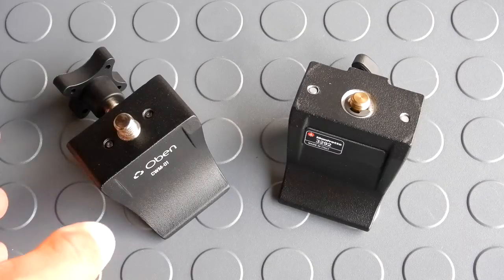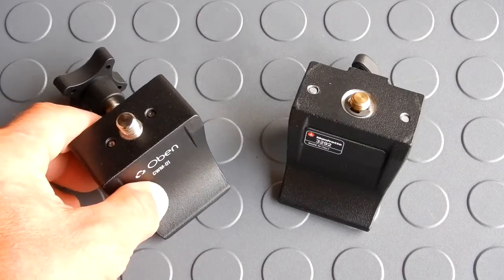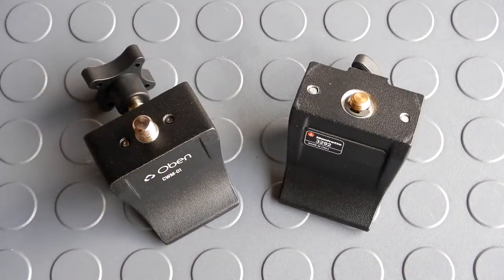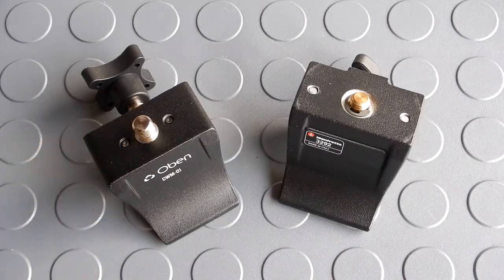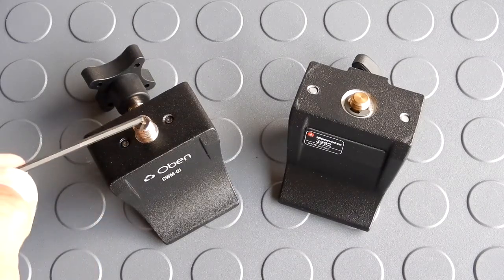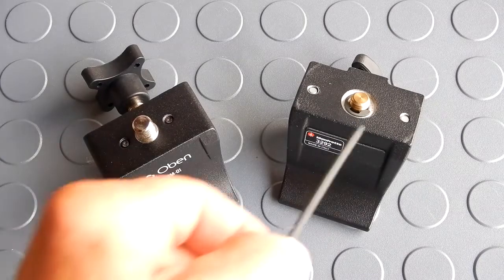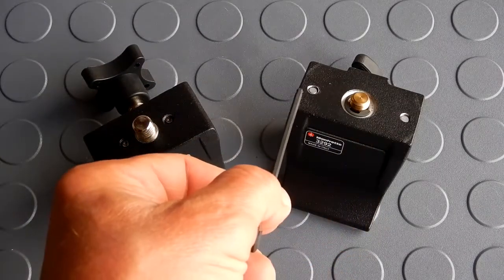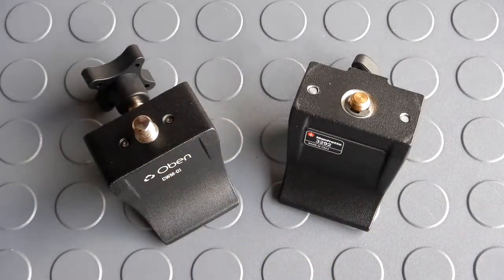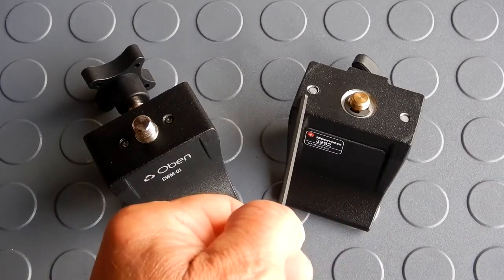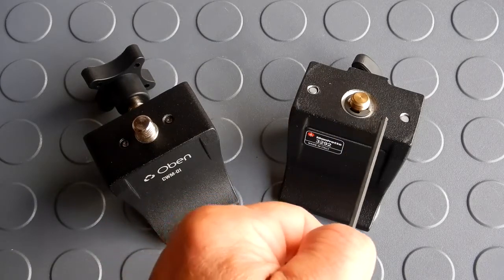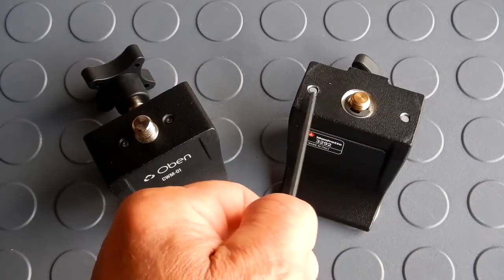Now if we take note, they also have lockdown screws. You can see here you've got one, two on the Oban here close to this 3/8-16 stud. On the Manfrotto you've got two and they're further apart. Now with a small ball head, those will not work - they're too far apart because I use small ball heads. So if I wanted to tighten them down it will not work on the Manfrotto, it will on the Oban.